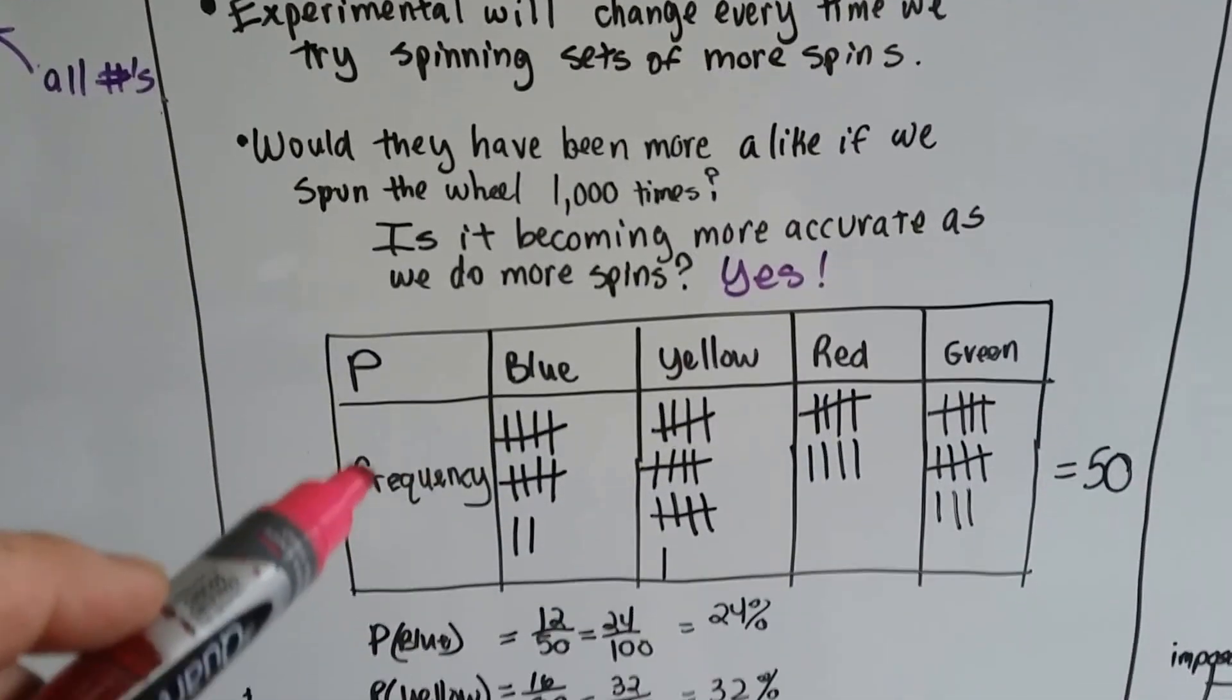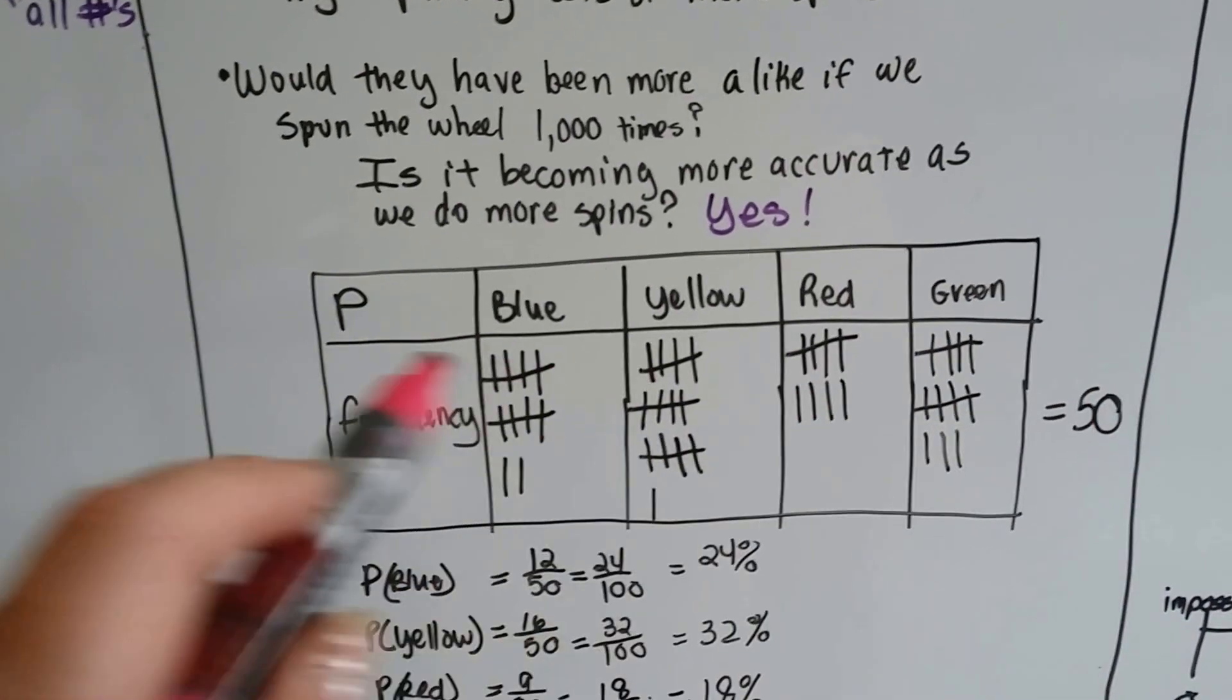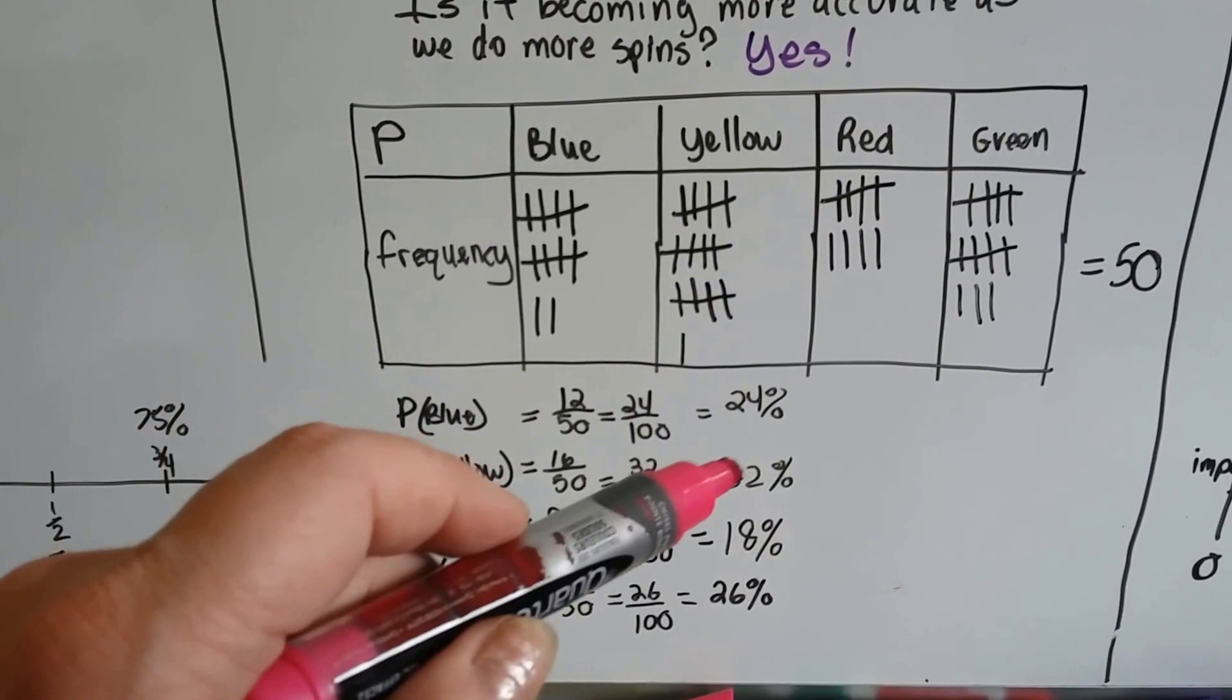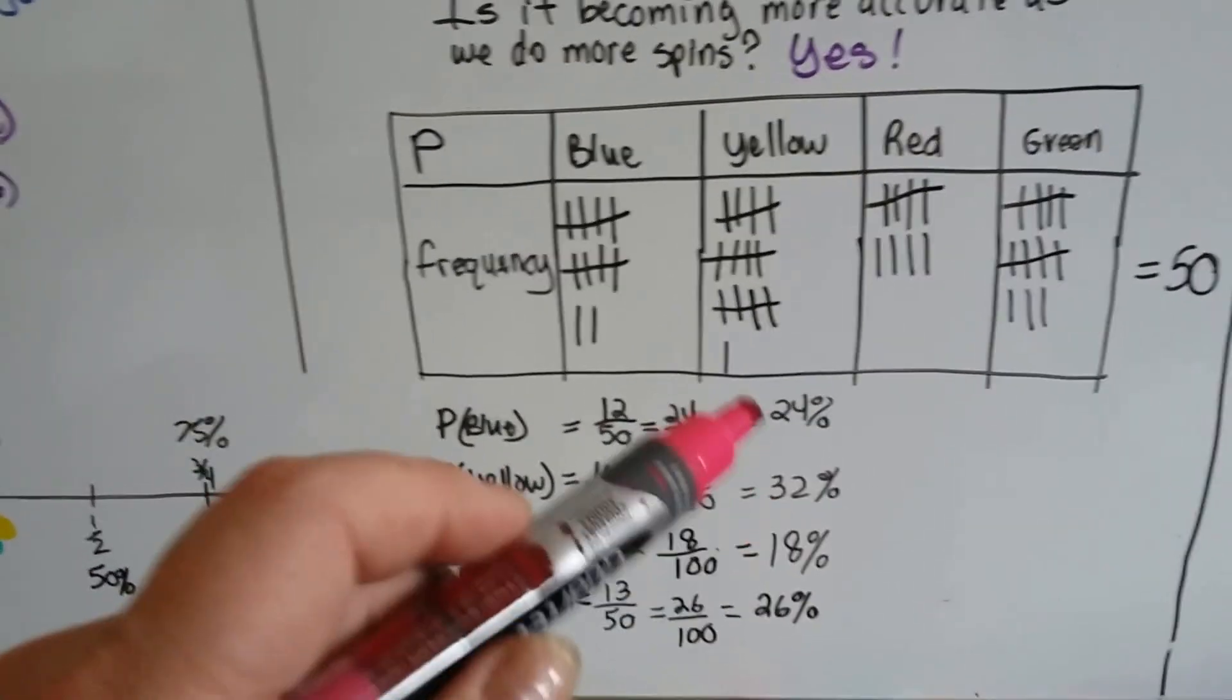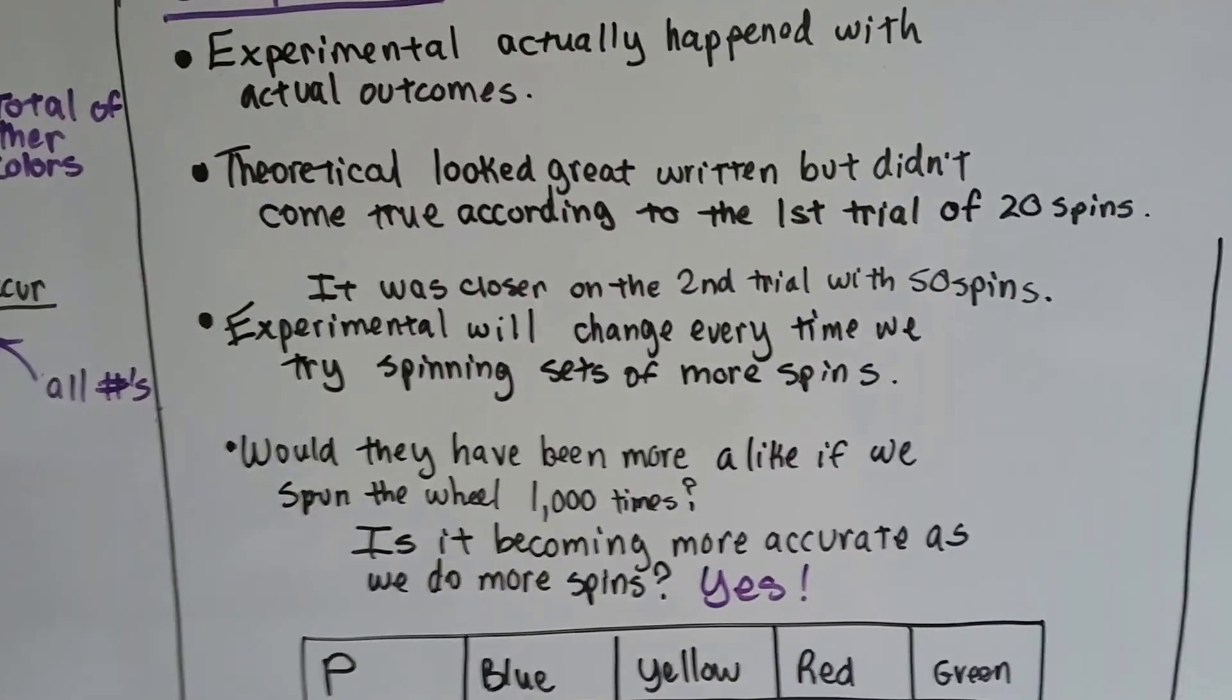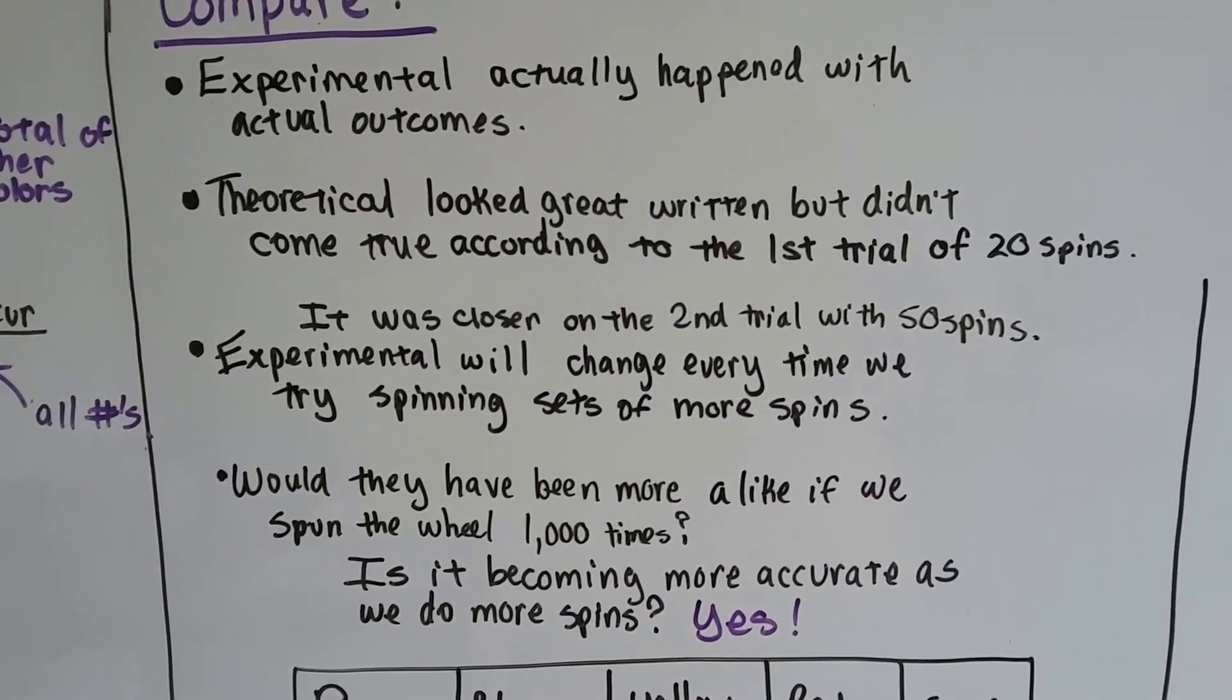Well, when I did 50 times of spinning the hand around, look at what I got. 24, 32, 18, and 26. It's very, very close to what the theoretical said. It was close to the second trial with 50 spins.